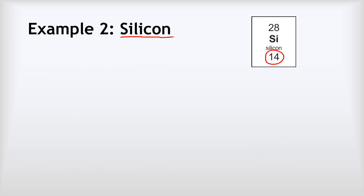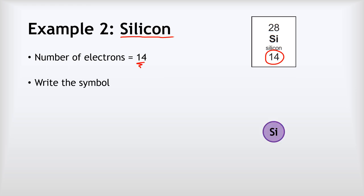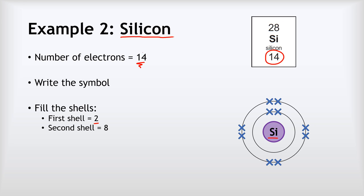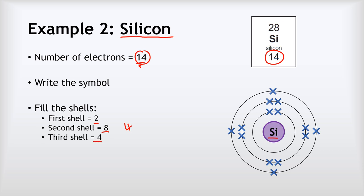Example number two is silicon, with atomic number 14 — so 14 electrons. We write the symbol Si in a circle, then fill the shells: two electrons in the first shell, eight in the second shell, and that still leaves four more to make up 14, so four go in the third shell. We write that as 2.8.4 — two in the first shell, eight in the second, and four in the outer shell.